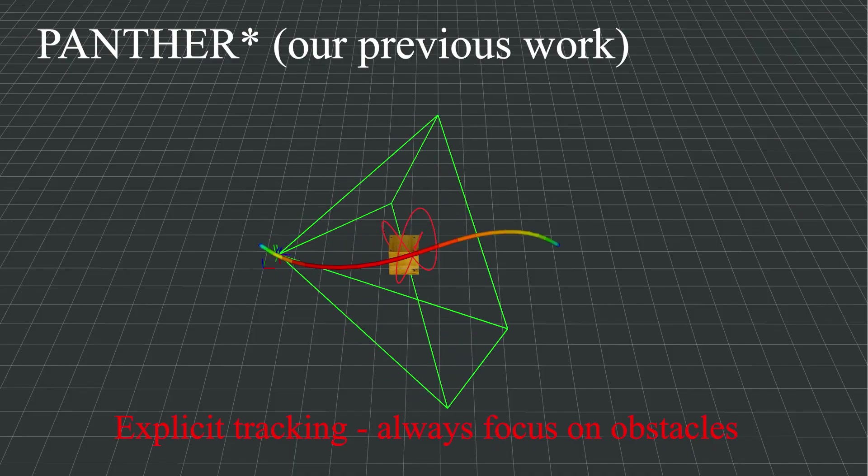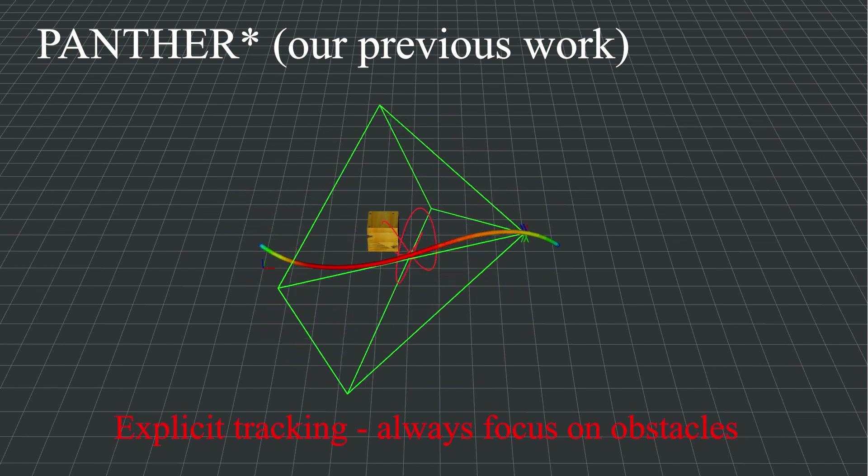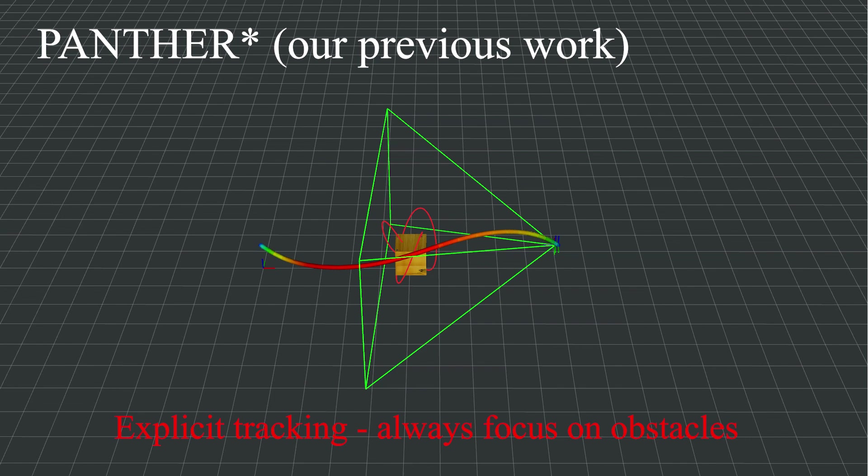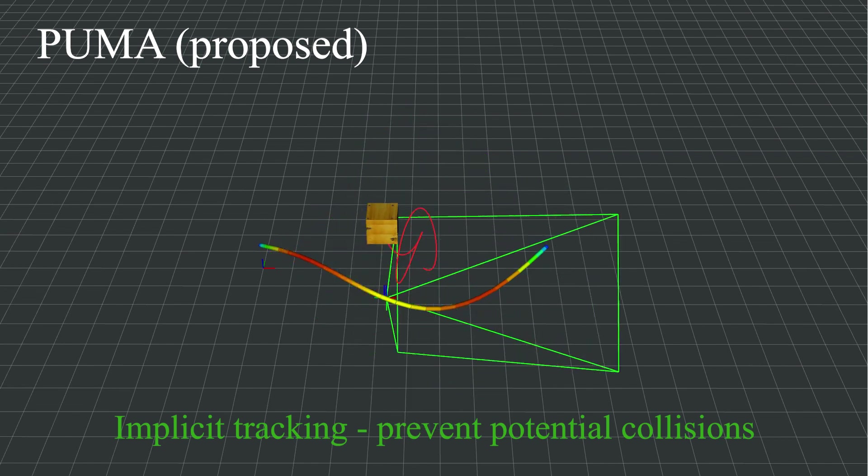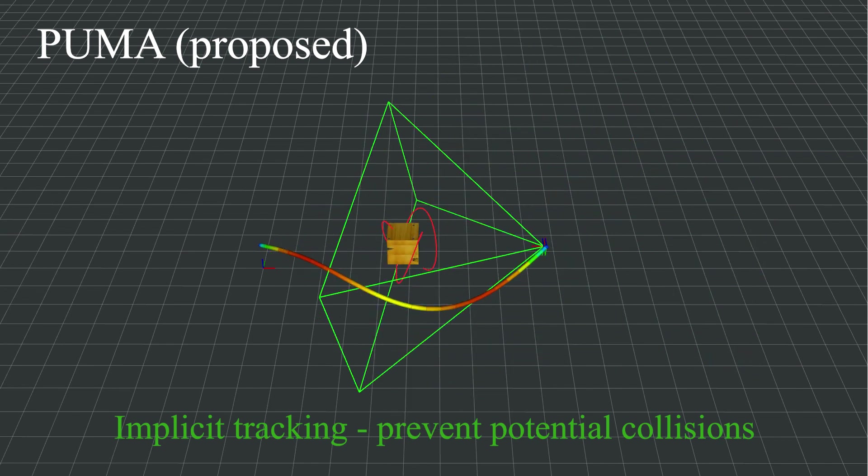As you can see, Panther Star always tracks obstacles, resulting in flying backward and paying no attention to the direction of motion. In contrast, PUMA balances obstacle tracking and direction of motion, leading to safer flight behavior.